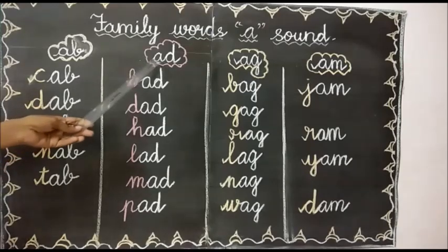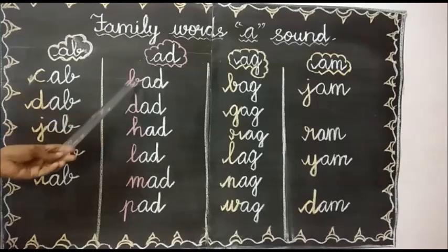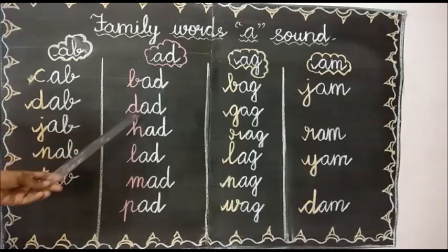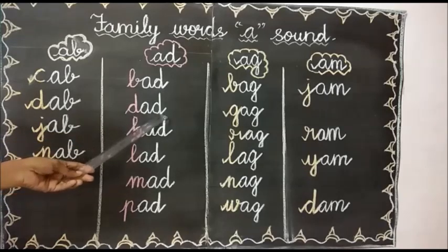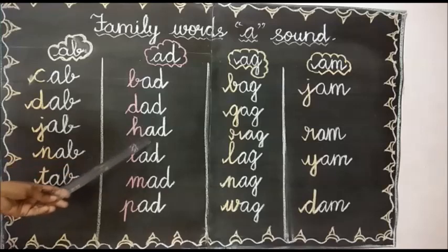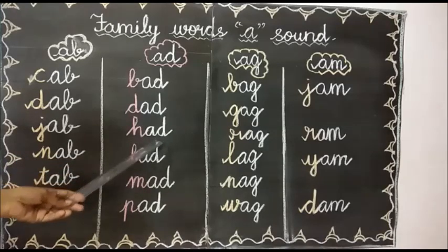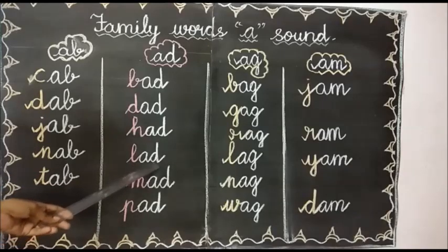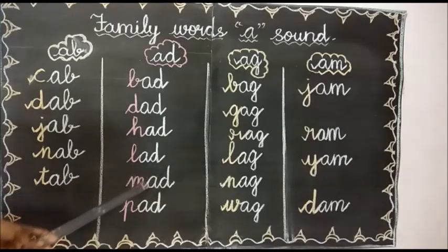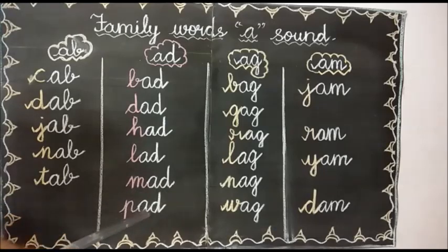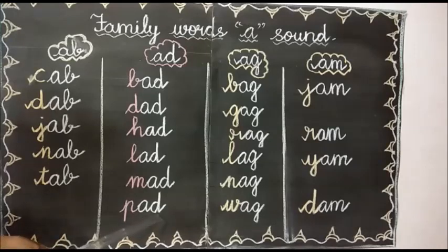Now AD words. A, D — ad. First one: bad. B, A, D — bad. Next one: dad. D, A, D — dad. Next one: had. H, A, D — had. Next one: lad. L, A, D — lad. What is the next one? Mad. M, A, D — mad. Next one: pad. P, A, D — pad.